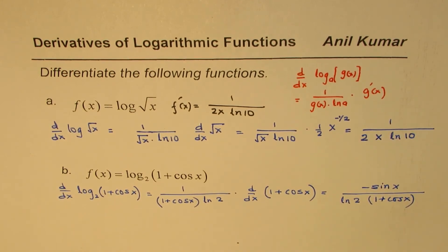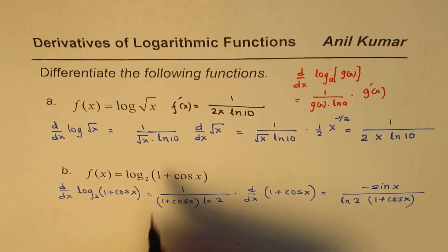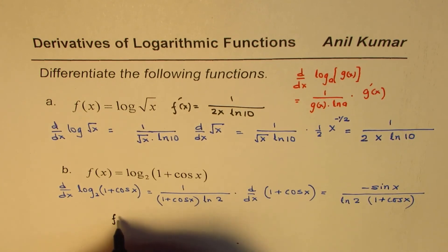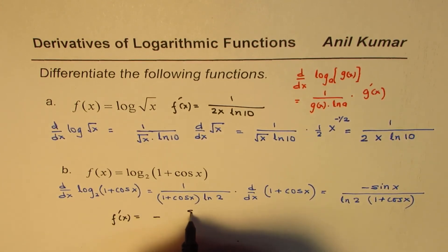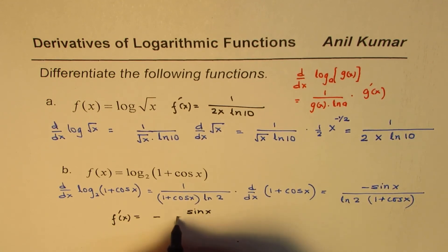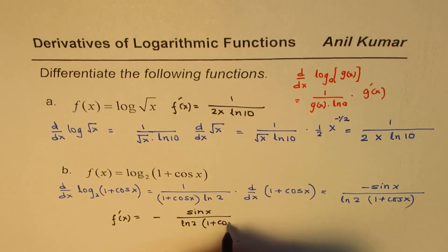So, that becomes the answer for the given question. So, we can write f'(x) as equals to -sin x over ln 2 times (1 + cos x).